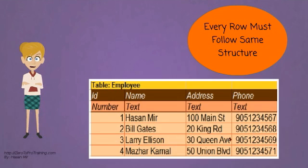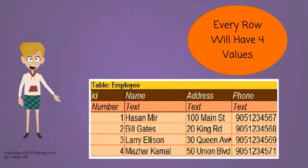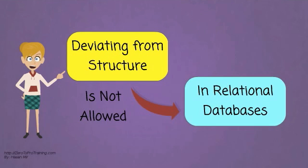Important point to note is that every row must follow the same structure. In this example, every row in employee table will have four values in the same order. Deviating from the structure is not allowed in relational databases.